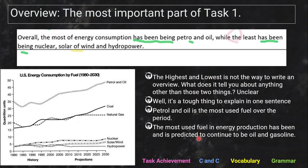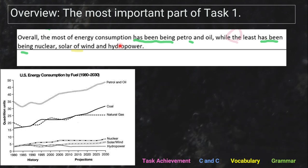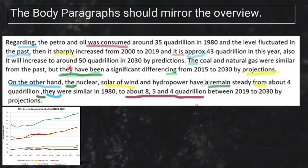Or: 'The most used fuel in energy production has been and is predicted to continue to be oil and gasoline.' That way you've got all the time periods covered. But your overview should set up your body paragraphs — if you just talk about the highest and the lowest, where are you going to put the rest? Also note: 'the least' indicates one thing, but she mentioned three. That's not really a clear Band 6 overview.